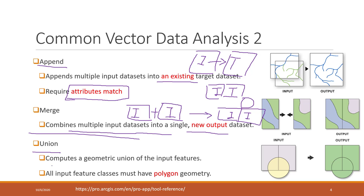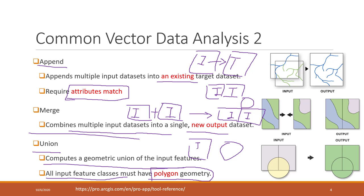Union also combines both together; however, union requires that all input features must be polygon features. So input one and input two should both be polygons, and the output feature will be a new polygon. This is based on what I checked from the ArcGIS Pro documentation — they may not require polygons in the current version anymore, but based on what I learned, union requires polygon geometry.